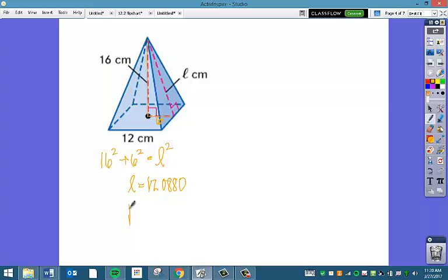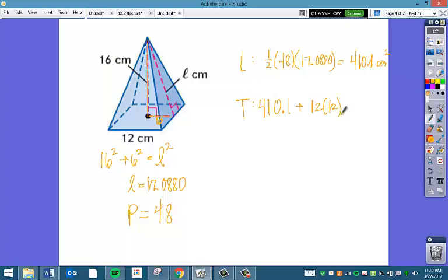The perimeter of your base is 48 again. So your lateral surface area is just one-half times 48 times 17.088. It gives us a lateral surface area of 410.1. And so then our total surface area, we're just going to take our lateral surface area and then we're going to add in the area of the base, which is almost the same problem as that last one. So lucky you, that was hopefully very easy.